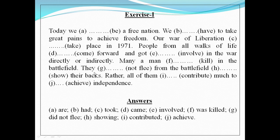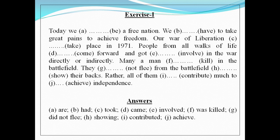'They ___ not flee from the battlefield.' We need to make this negative. For negative sentences in indefinite form with no auxiliary verb, we must use the 'do' verb as auxiliary. As it is in past indefinite form, we use 'did.' The answer for gap G is 'did not flee.' Remember: in negative indefinite sentences, 'do/does/did' is followed by the present form of the verb.